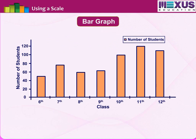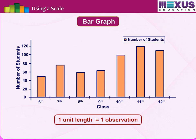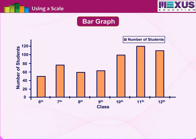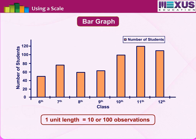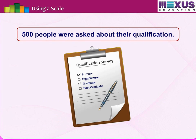For example, in a bar graph where numbers in units are to be shown, the graph represents one unit length for one observation. If it has to show numbers in tens or hundreds, one unit length can represent ten or one hundred observations. Let us learn how to use this scaling with an example: five hundred people were asked about their qualification.